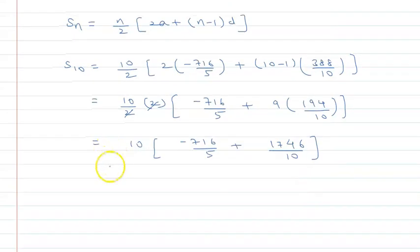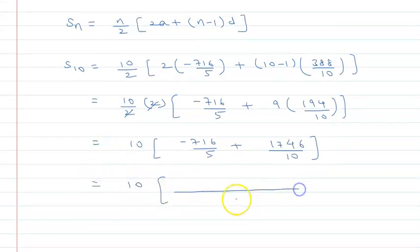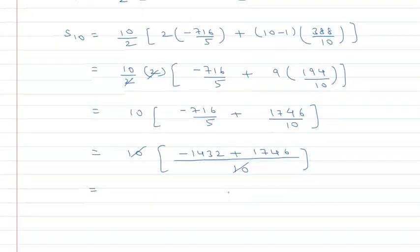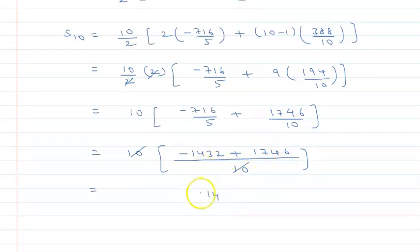10. So this is, taking LCM of 5 and 10, that is 10. So this is 10, and this is 2 into, this is minus 1432 plus 1746. 10 cancel from 10. Now if we subtract, 46 minus 32 is 14, and 1700 minus 1400 is 300, so 314. This is S10.